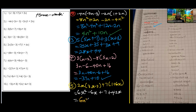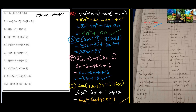So we write 6x squared, minus 6x plus 42x, plus 7. Combining: negative 6 plus 42 means I take 6 from 42 to get 36. So the answer is 6x squared plus 36x plus 7.